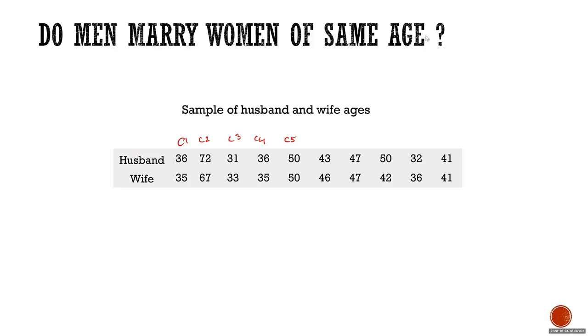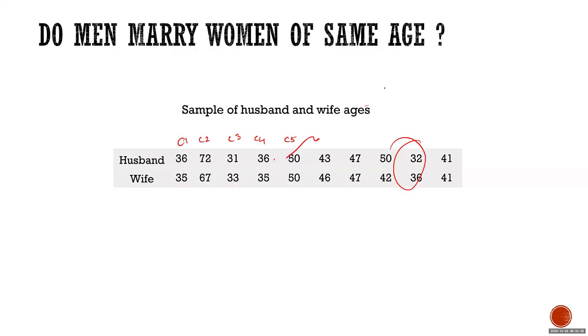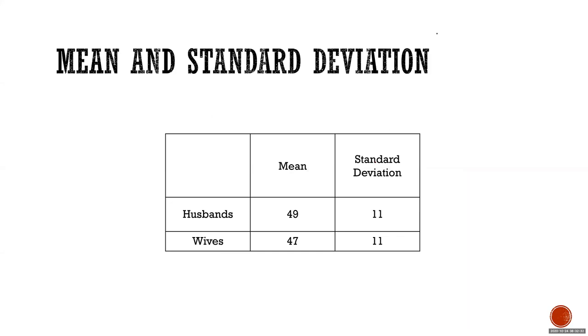Am I correct? Is that the insight? Yeah, men are elder mostly. In a few cases, husband and wife have same age, right? In a very few cases, probably wife has more age than husband. That's the insight. Now, instead of showing the previous sample, if I showed you this, will you be able to figure out the same insight? Let's say I showed you only this. The mean age of husband is 49, standard deviation is 11. Mean age of all the wives is 47 and the standard deviation is 11.